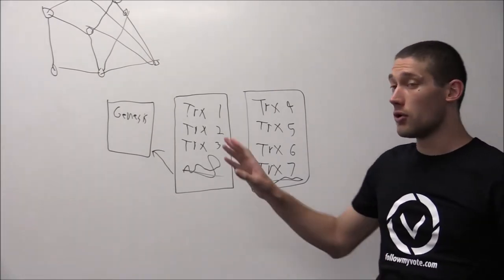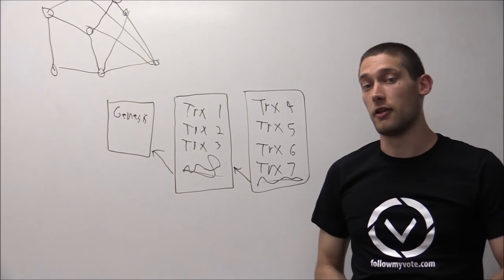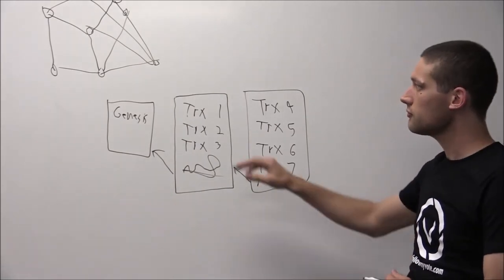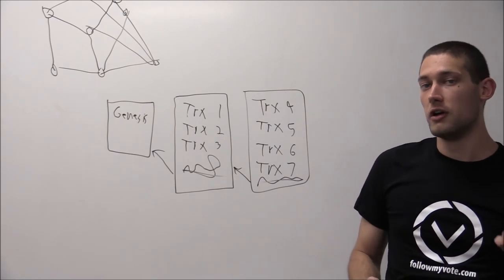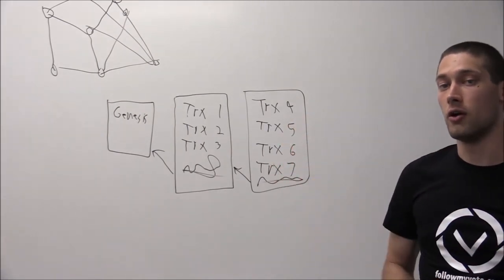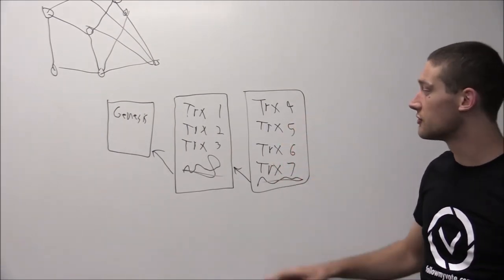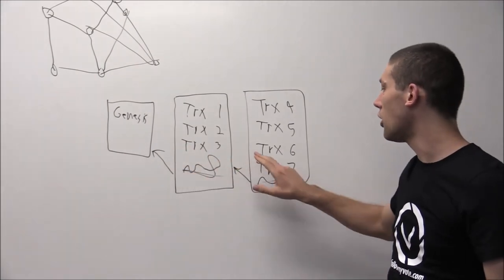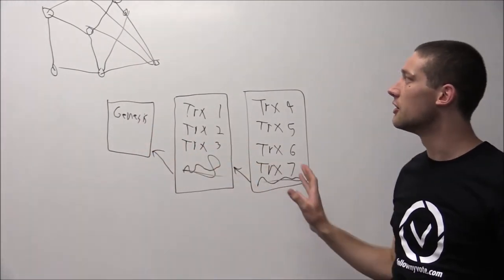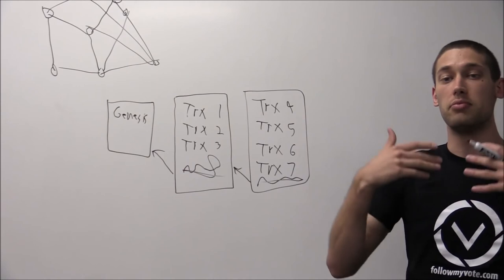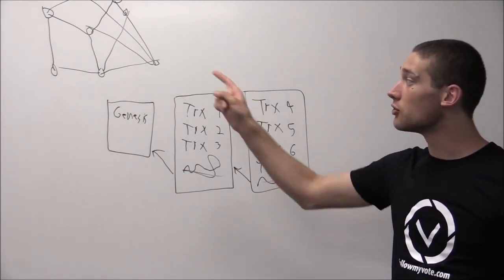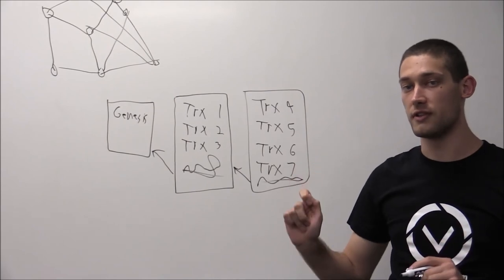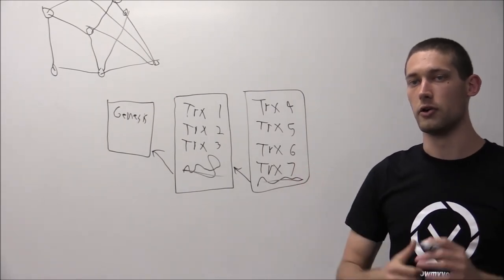When a new node appears in the P2P network and connects to some of the other nodes, the other nodes which have been in the network before fill that new node in on the history of the database. So they send it all of the blocks since Genesis so that that new node can replay the history of transactions and come to the same conclusion as to the current state of the database as all other nodes in the network.